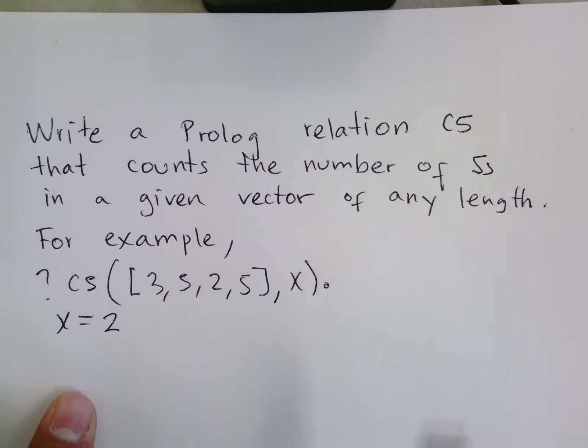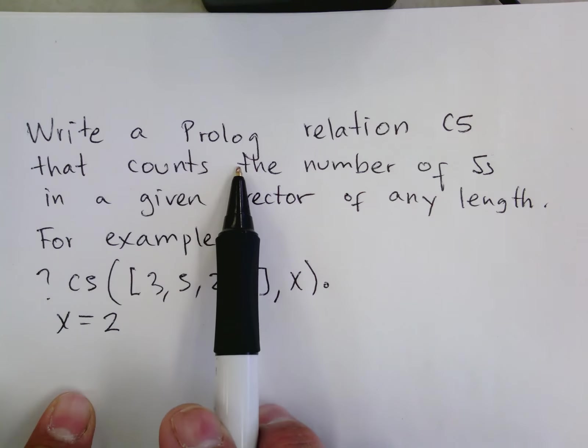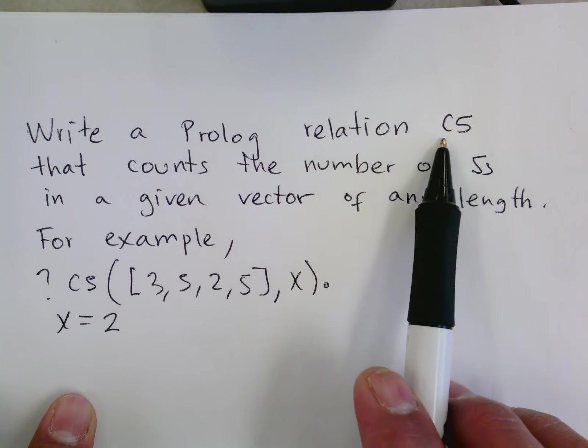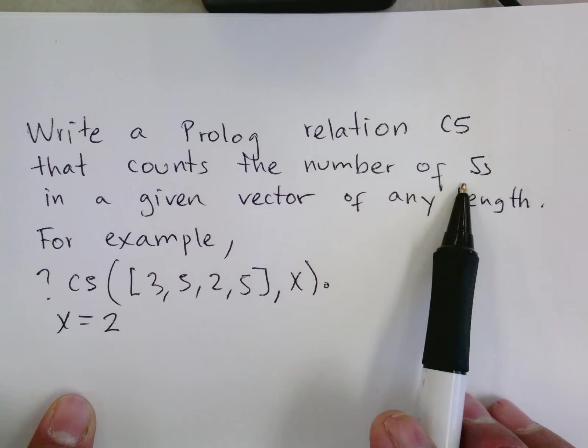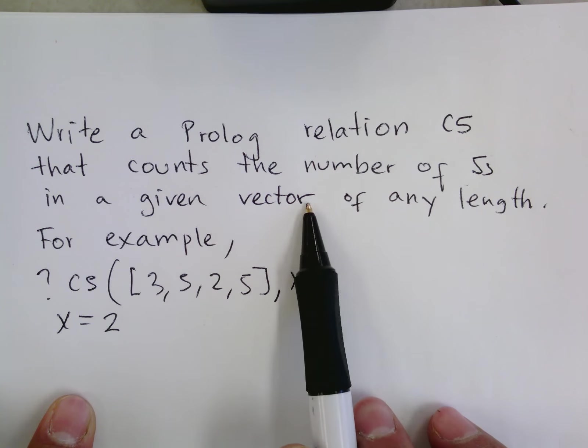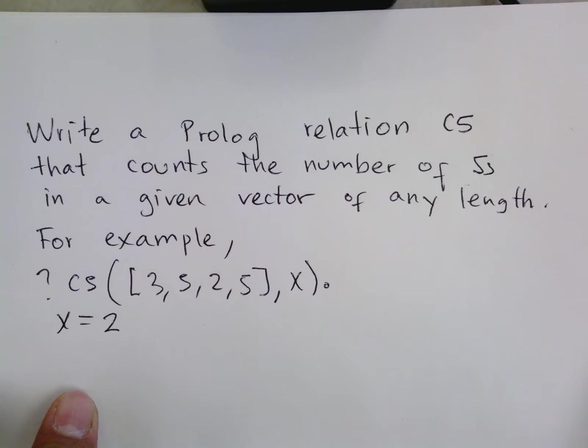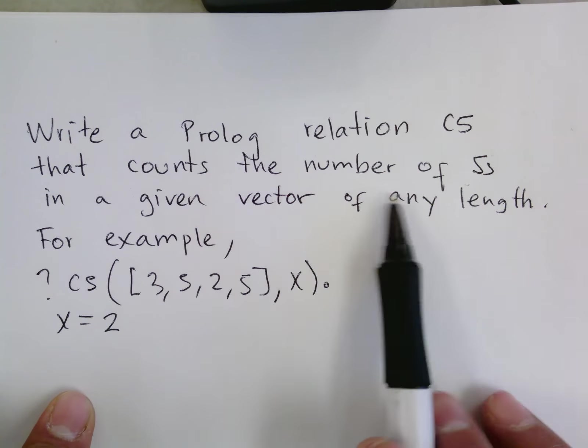In this question they are asking us to write a Prolog relation that has the name cs such that this cs counts the number of 5s in a given vector. We are going to see that as a list and we don't care about the length.